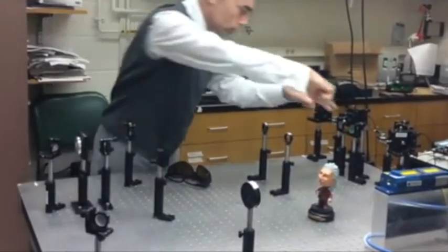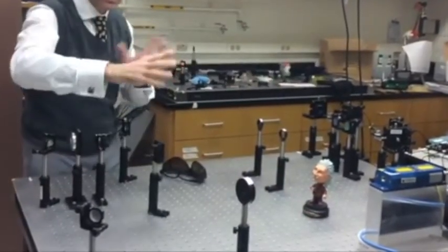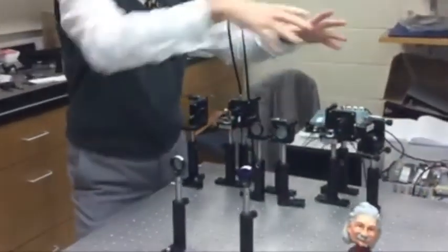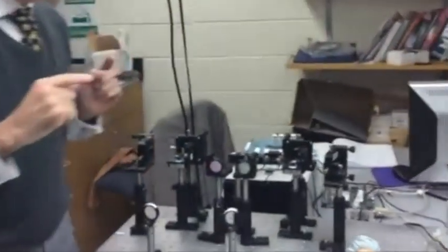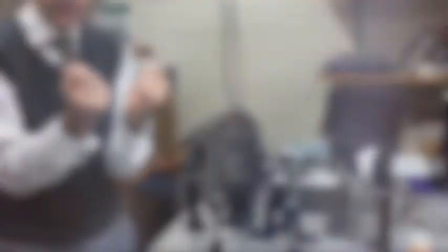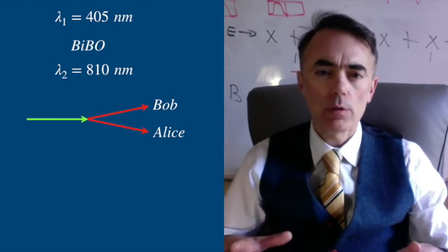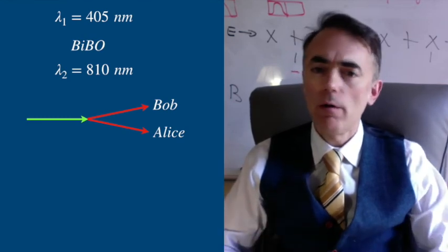These photons will leave the crystal at a certain angle and you can send one photon to Alice and the other photon to Bob. Alice and Bob can measure the polarization of the photons and from there, after sharing some partial information, generate a bit of information.